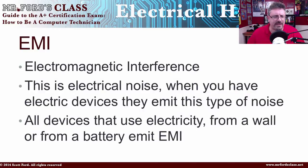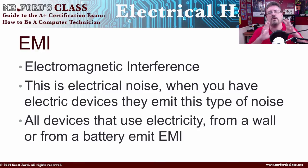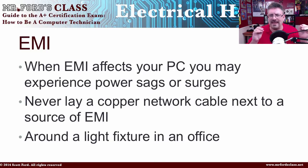Next, we have EMI, which stands for Electromagnetic Interference. This is electrical noise that all devices emit. Everything that has electricity going through it emits a field of electrical noise, and it can interfere with some devices. For example, if you have a networking cable, you don't want to lay it over fluorescent lights because the noise can really mess up the signals.